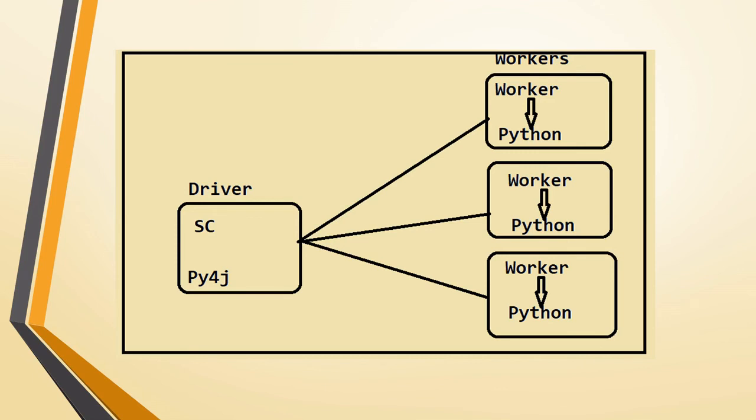Because of this context switching between Python and the JVM, we see performance issues while working with PySpark RDDs. When working with DataFrames, it comes with the Catalyst Optimizer, which compiles and optimizes a logical plan and has a cost optimizer that determines the most efficient physical plan. This is the main reason why DataFrames have better performance than RDDs.